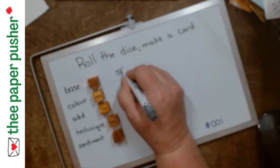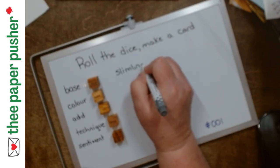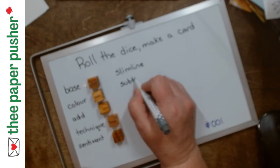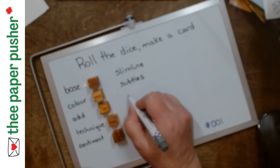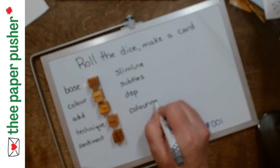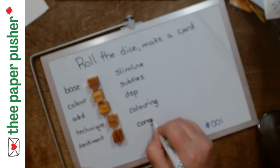Okay. So what we want is a slimline card. I can't see because the camera's in my way. Using mostly the subtles color family. We're going to add some DSP to our card. That's the designer series paper or pattern paper. We're going to have a little bit of coloring. And it's going to be a card that says congrats, congratulations, way to go, well done, something in that field.